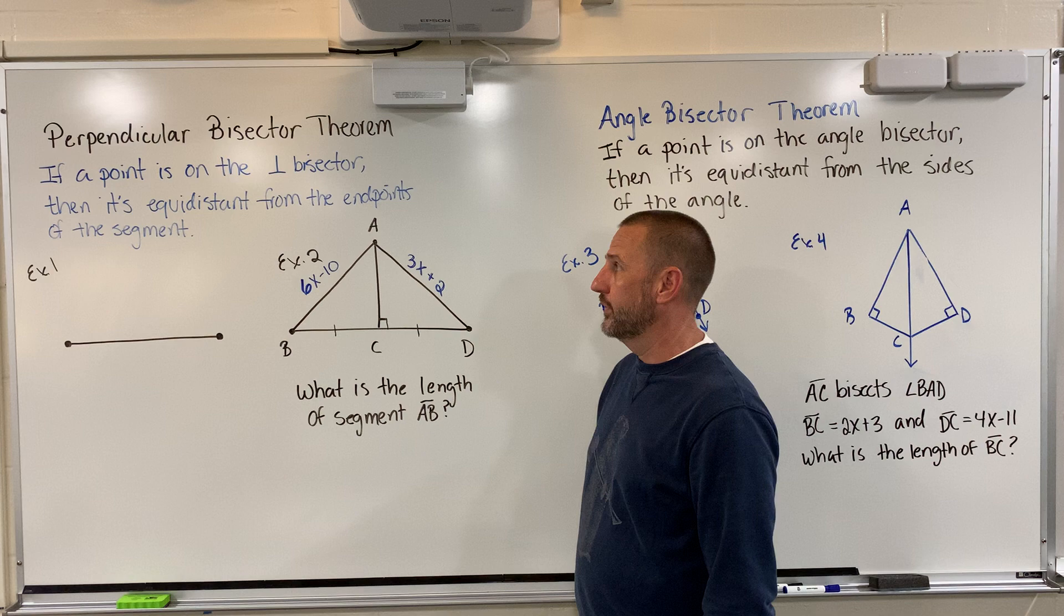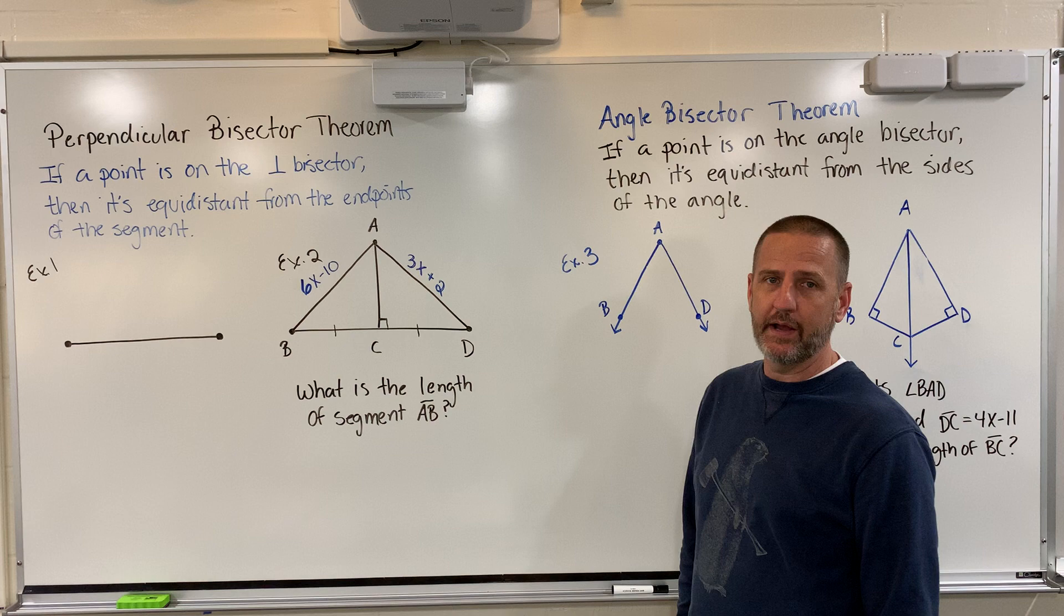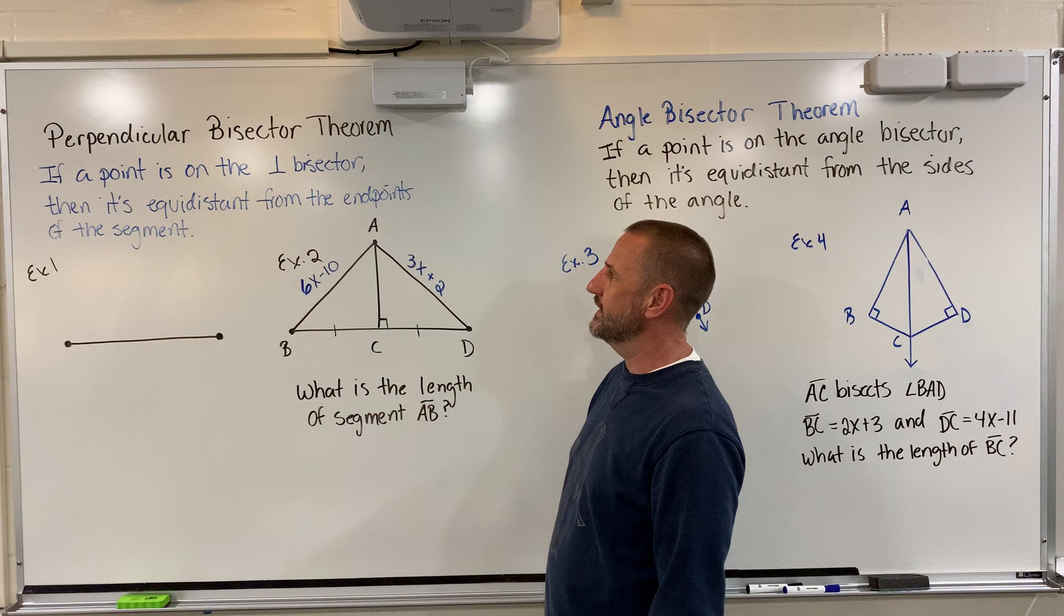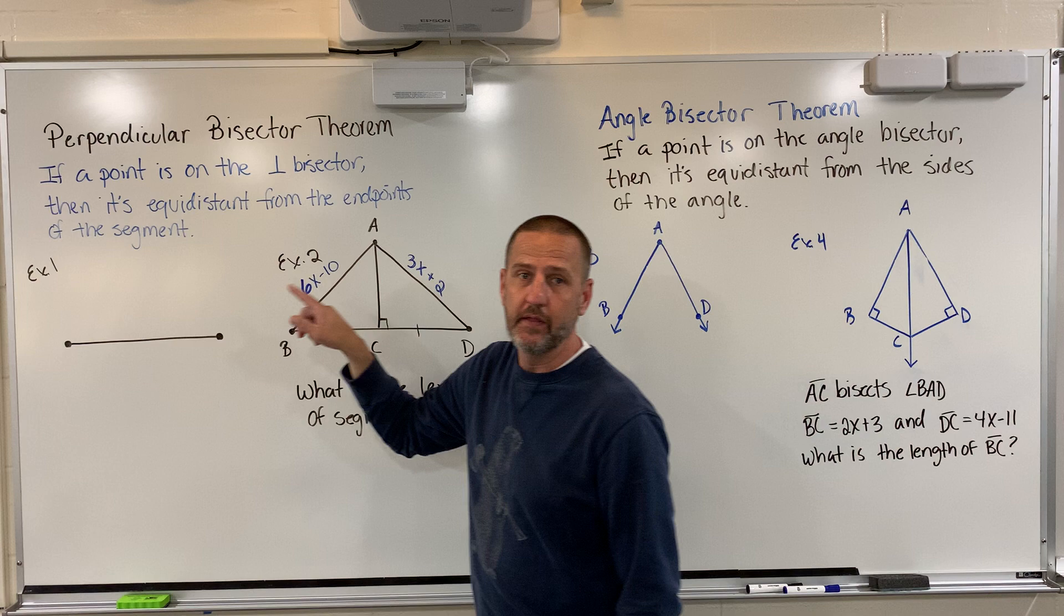That theorem also has a converse that we're going to look at. If we say it backwards, it's going to be a true statement as well, and we call that the converse. If a point is equidistant from the endpoints of a segment, then that point is on the perpendicular bisector.